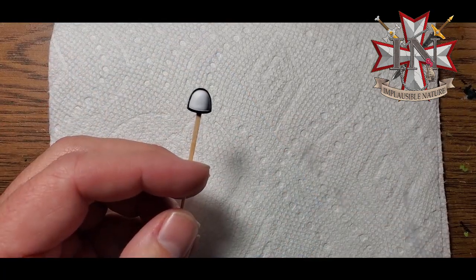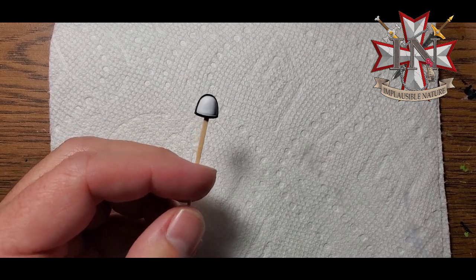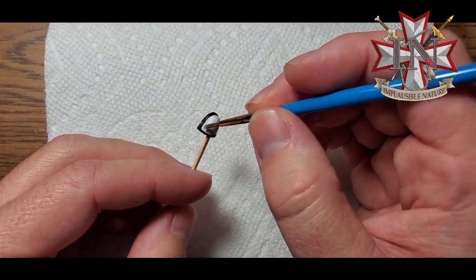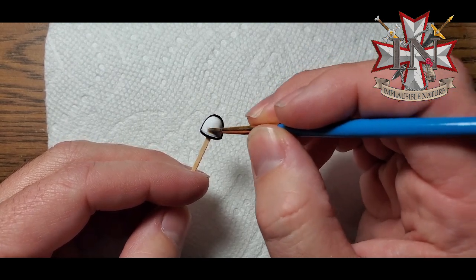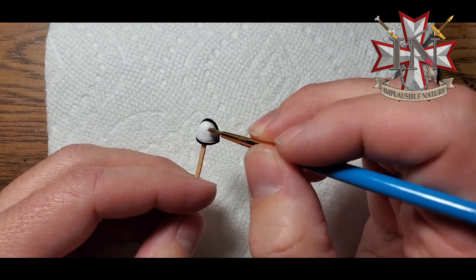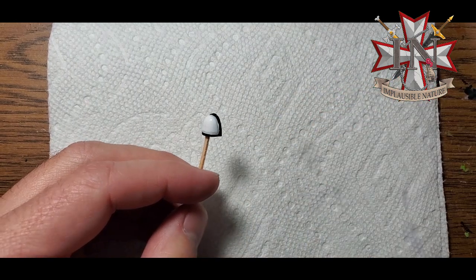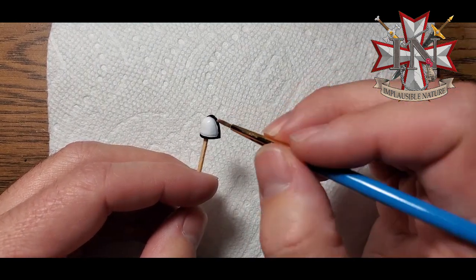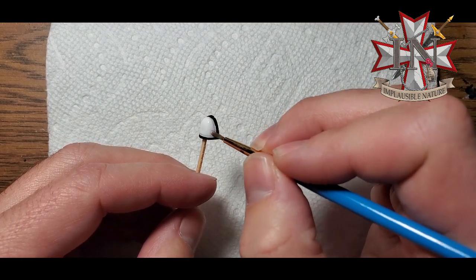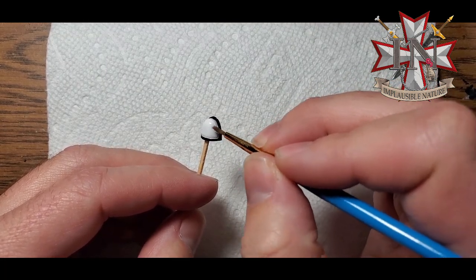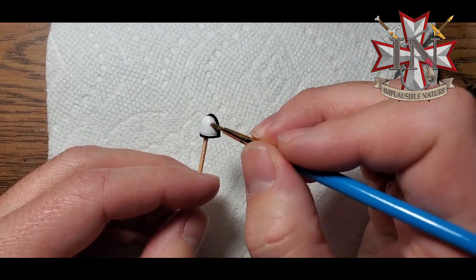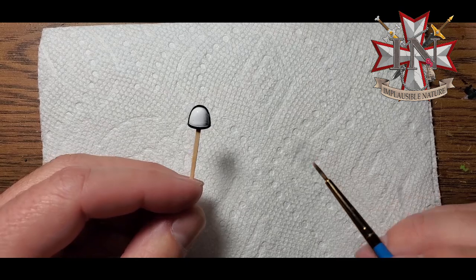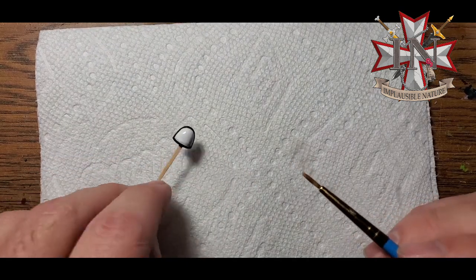All right, so the first step here is we're going to paint a nice thin coat of the gloss varnish onto the area where we want the decal to be. You don't need a lot, just a nice thin coat. It goes on easy. Washes off with water. Just make sure you cover the area surrounding so that you have a large enough area so that the entire decal will fit on the gloss varnish.